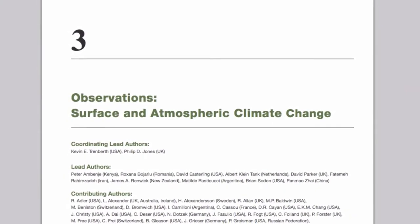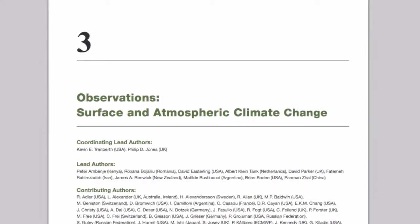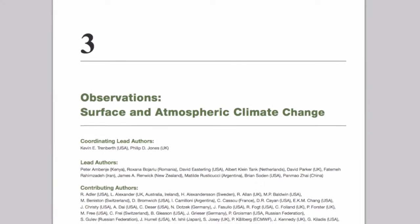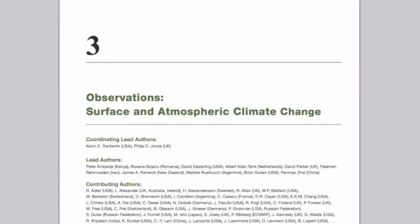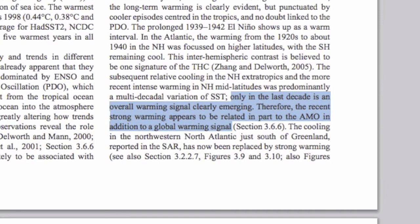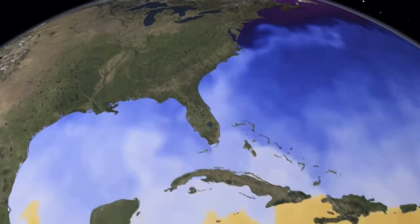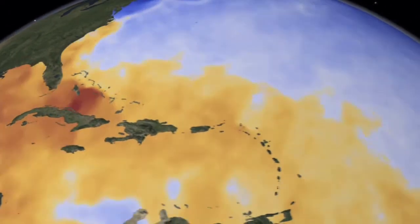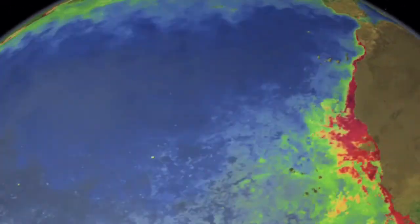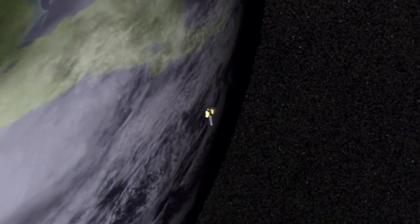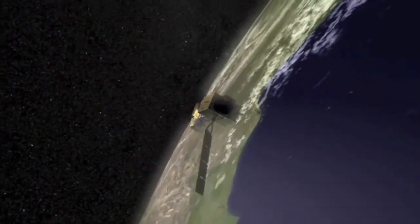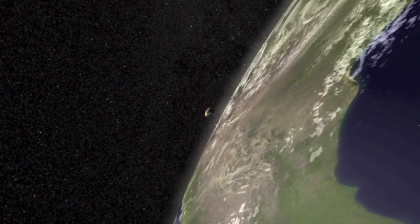One of the reasons they say this is mentioned in chapter 3, Observations: Surface and Atmospheric Climate Change, where this graph first appears. It says on page 246: 'Only in the last decade is an overall warming signal clearly emerging. Therefore, the recent strong warming appears to be related in part to the AMO — the Atlantic Multidecadal Oscillation — in addition to a global warming signal.' What they are referring to is that early in the century the human signal wasn't even detectable. In the report itself they say our contribution to increasing temperatures could only be detected since 1970. This is what makes these linear trends not ideal for examining what our climate is doing.